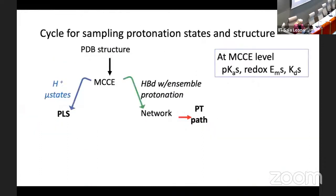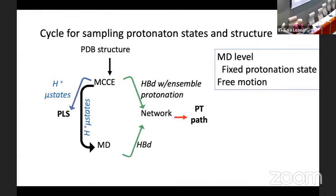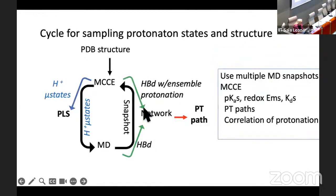What I'm going to show you today is how we get protonation microstates. This will show us where the protons can be loaded and unloaded when we do proton pumping. We can also see in MCCE when hydrogen bonds are being made in the plethora of Monte Carlo states. I would really like to encourage you to think about these protonation microstates as something that can go into molecular dynamics. We've used MD trajectories to get hydrogen bonds, and we can take multiple snapshots and bring them back into MCCE to look at how pKs, EMs, and other properties change.